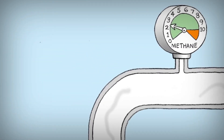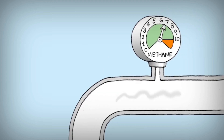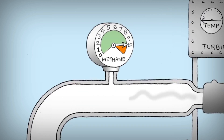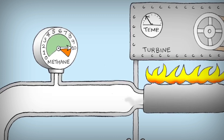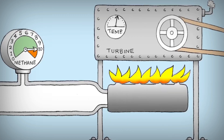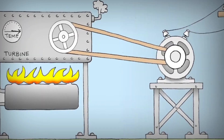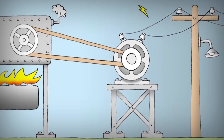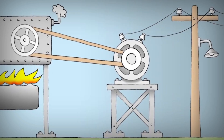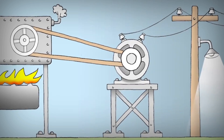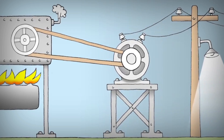Biogas is made up mainly of methane, CH4, and carbon dioxide, CO2, with small amounts of water vapor, particulates, and other gases such as hydrogen sulfide, H2S. Biogas can be processed and used for a variety of energy needs, such as the generation of heat, power, and fuel.